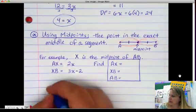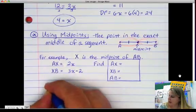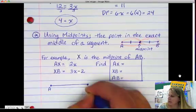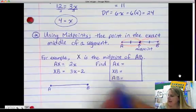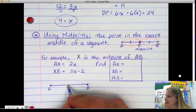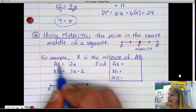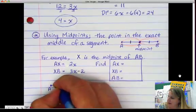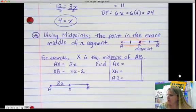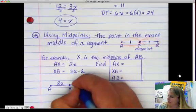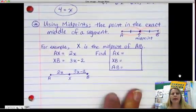So, we're told that X is the midpoint of AB. So, we have a segment AB. So A is at one end, B is at the other end, and X is the midpoint in the direct, exact middle. So, now, we're told that AX is 2X. That's the length. XB is 3X minus 2.